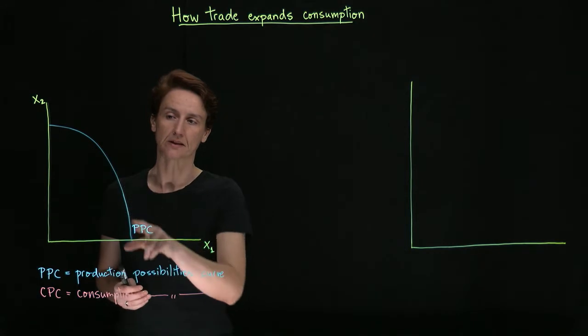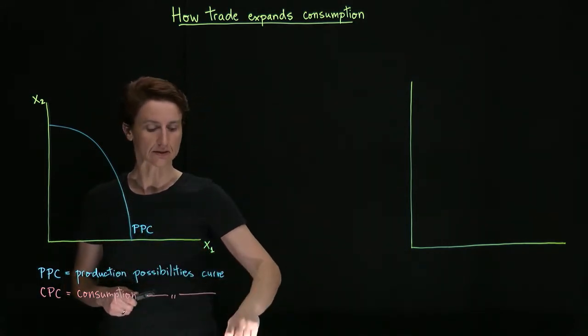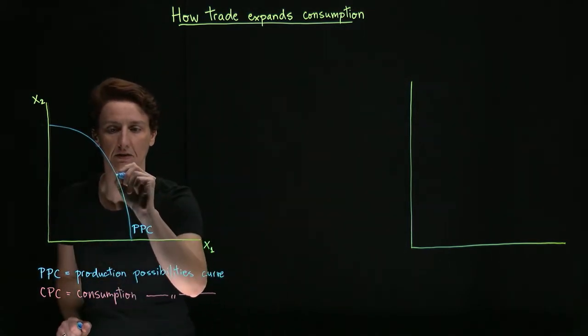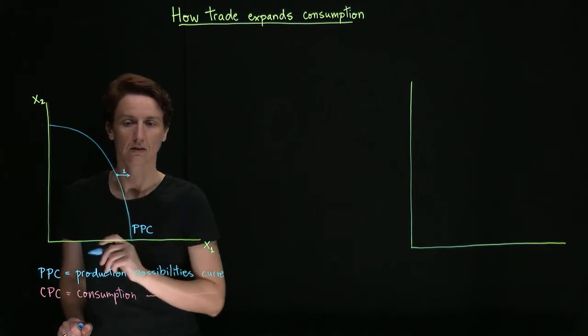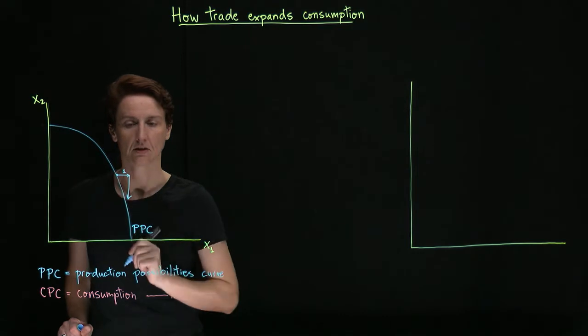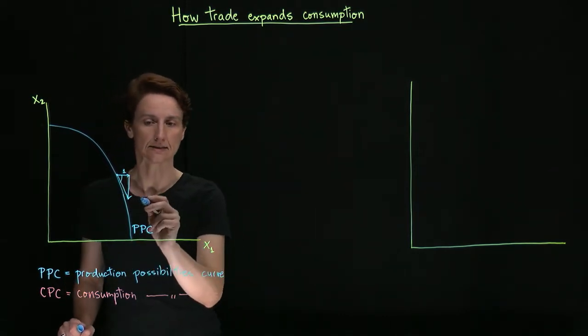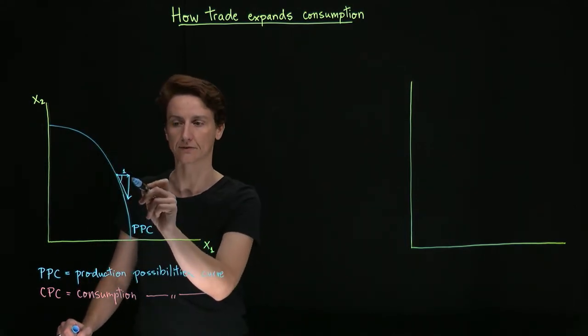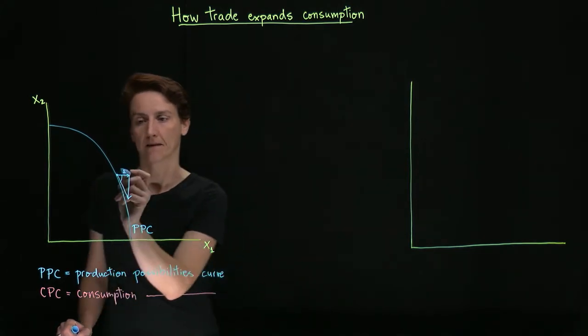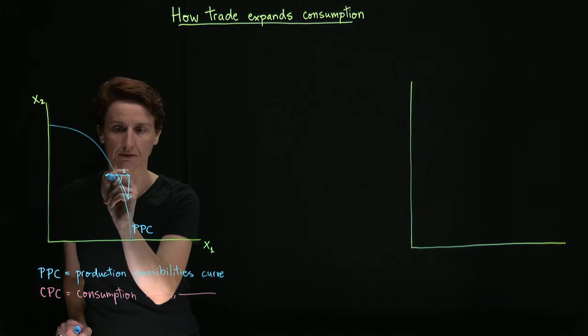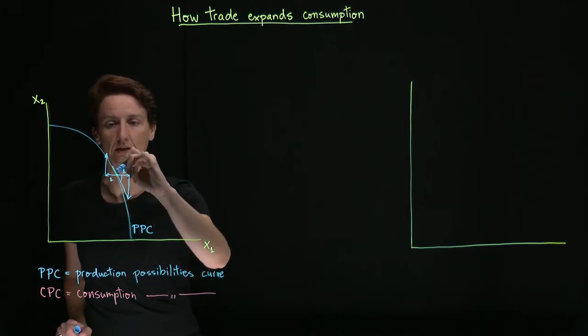The slope of PPC also has an important interpretation. If we consider some random point, let's say we're starting from here, if we travel to the right by one unit and then travel down, this slope is telling us how many units of good two we have to give up in order to make one more unit of good one. It's also telling us if we give up a unit of good one, how many units of good two can we make in its stead.